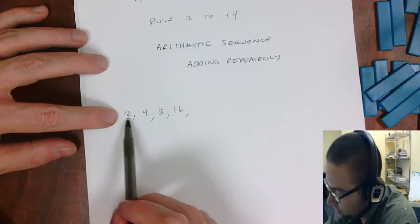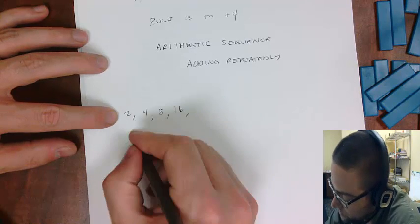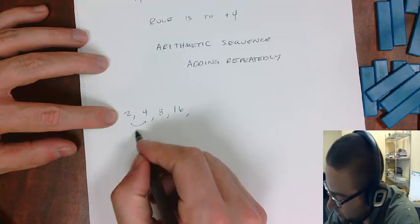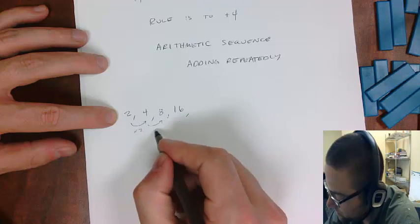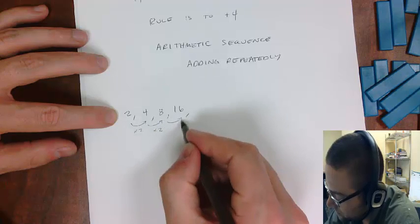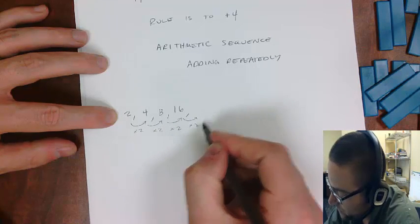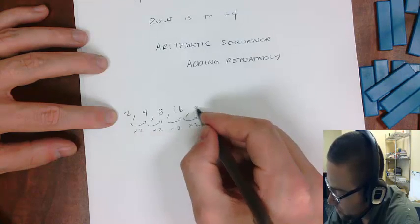What about multiplying? So 2 times what gives you 4? 2 times 2, right? And then 4 times 2 is 8. So it looks like my pattern is multiplying by 2 each time. So if I were to multiply by 2 again, 2 times 16 would be 32.